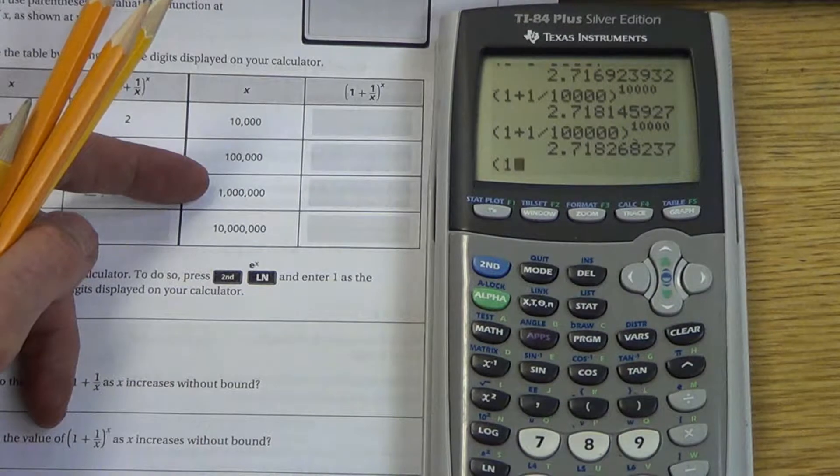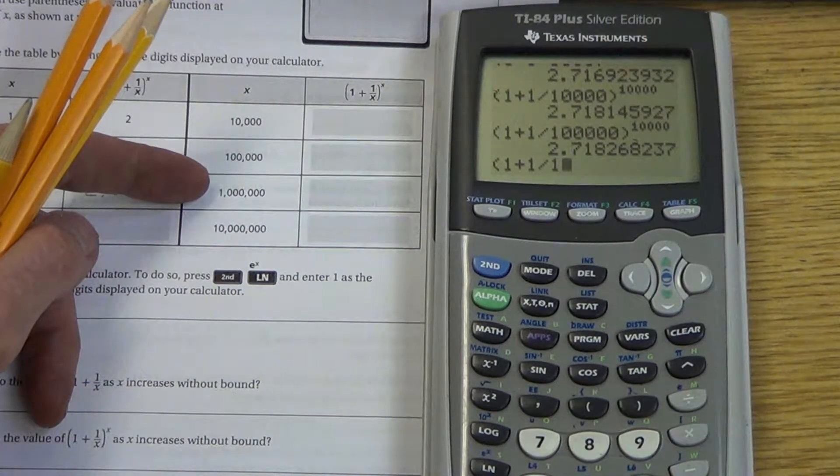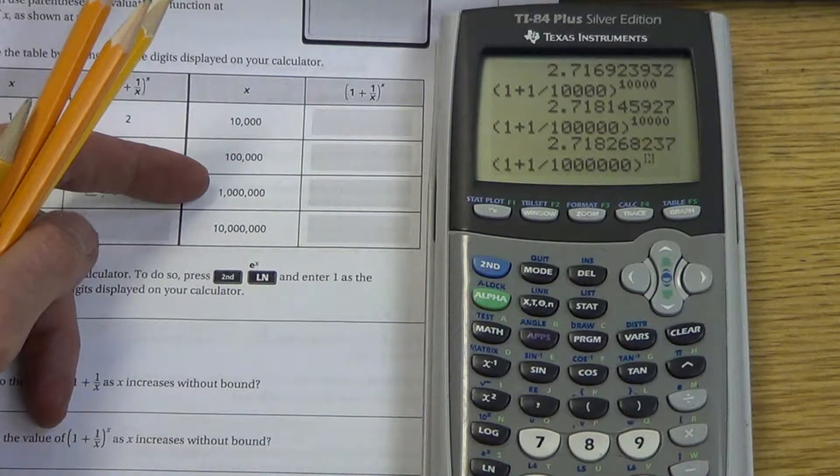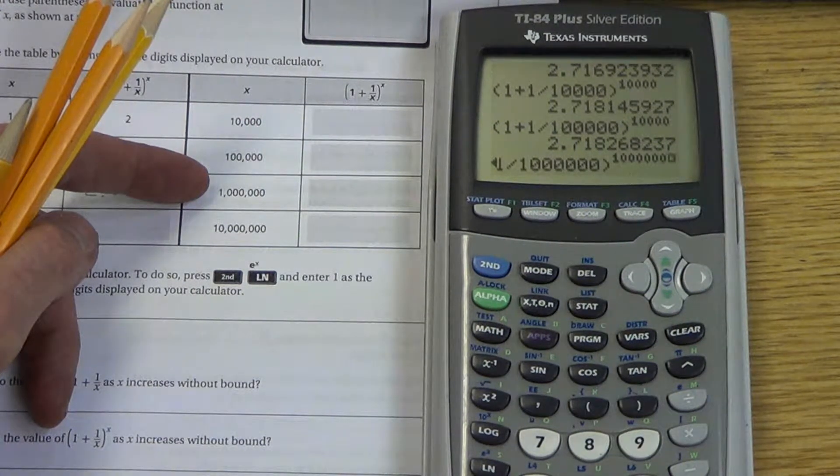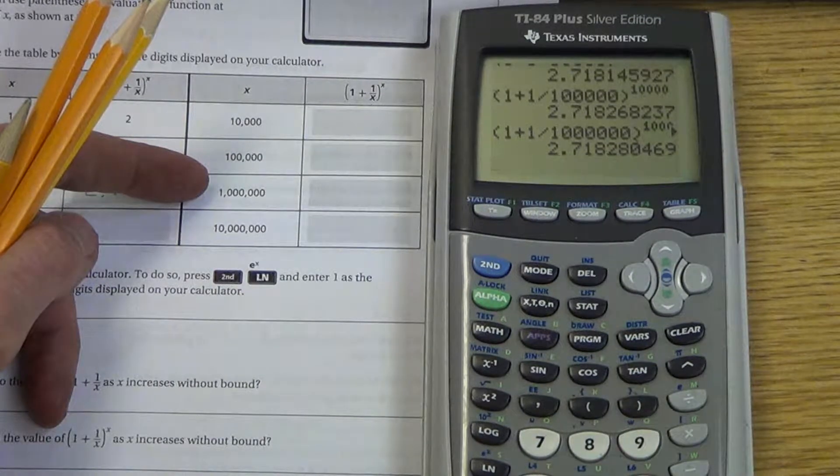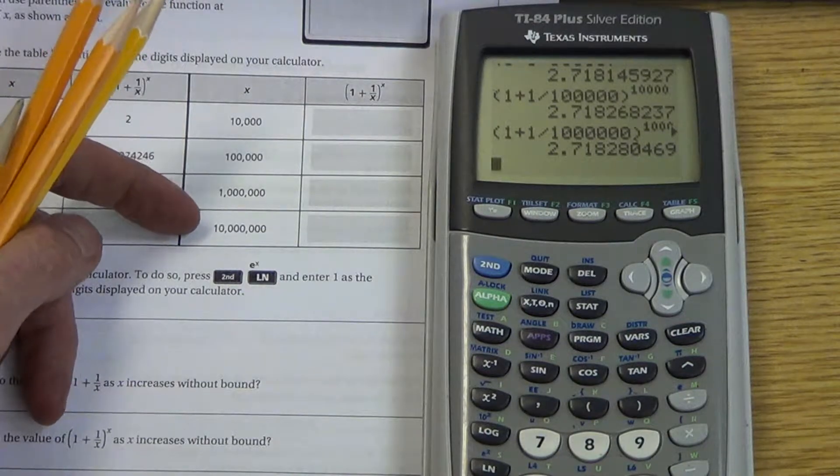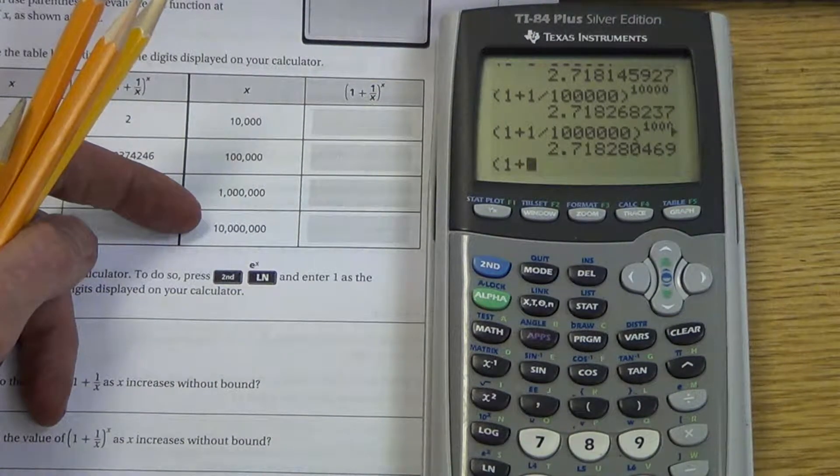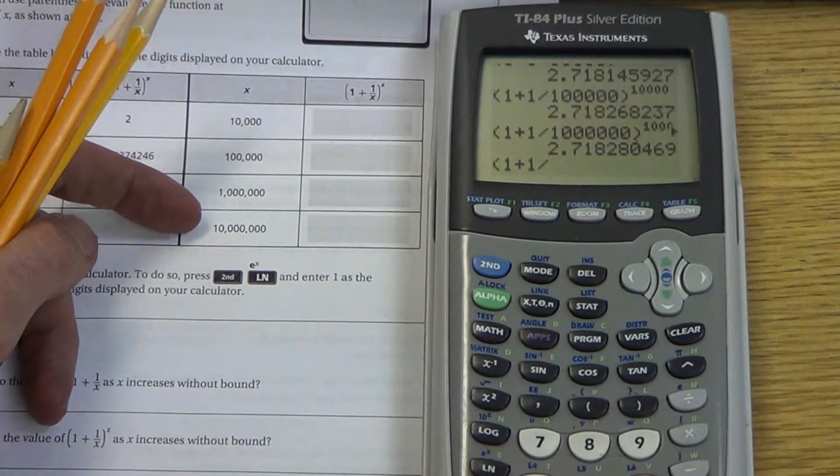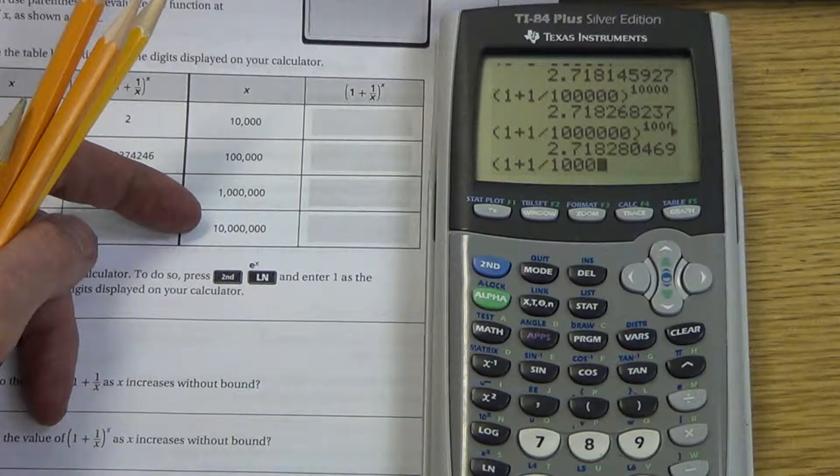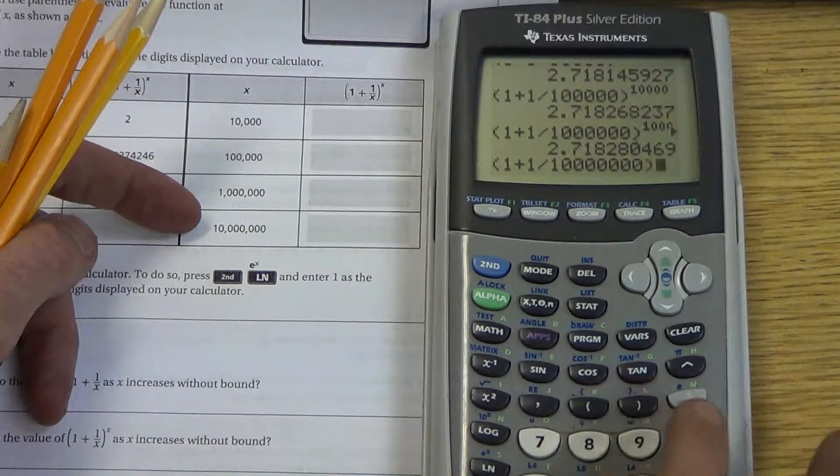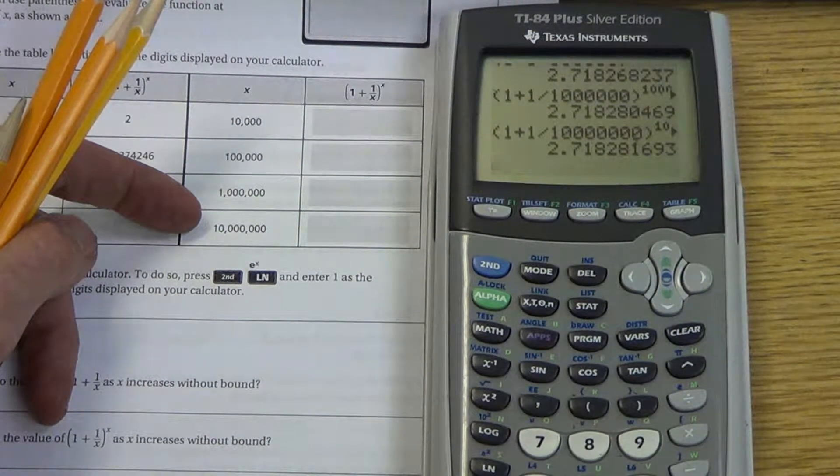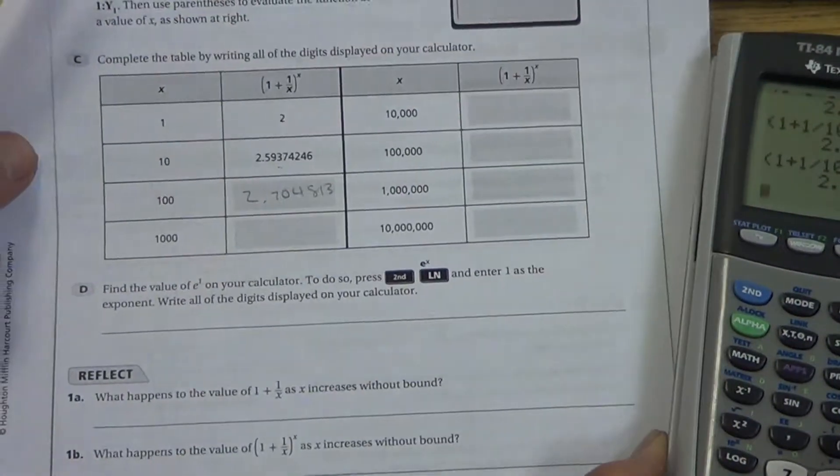What number? You can see the pattern right here on my screen. Now it's 1 plus 1,000,000. See the pattern of what you're getting closer and closer to. Last one. 10,000,000. So it'll be 1 plus 10,000,000. Raise to the 10,000,000. There we go.